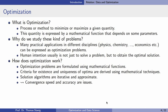How does an optimization algorithm or method work? Optimization problems are usually formulated using mathematical terms and functions. In this lecture we aim for algorithms, methods, and analyzing optimization problems, so we rely on a mathematical formulation. Then, criteria for existence and uniqueness of optima are derived using mathematical techniques — you might know this from school where you compute the first-order derivative to characterize a local minimum or maximum.